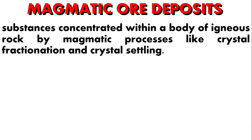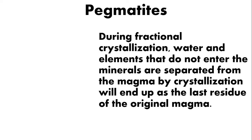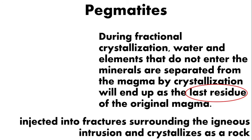Magmatic ore deposits are substances concentrated within a body of igneous rock by magmatic processes like crystal fractionation and crystal settling. These processes can concentrate ore minerals containing valuable substances by taking elements that were widely spread in low concentration and concentrating them in minerals that separate from the magma. For example, we have pegmatites. During fractional crystallization, water and elements that do not enter the minerals are separated from the magma by crystallization. They will end up as the last residue of the original magma, which is rich in silica and water. They will be injected into fractures surrounding the igneous intrusion and crystallize as a rock — these are now called pegmatites.